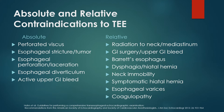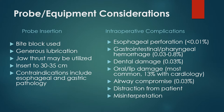Probe and equipment considerations: use a bite block to protect both the teeth and the TEE probe, which costs about $50,000. Generous lubrication decreases air in the esophagus and improves contact. Decrease the amount of air in the esophagus and improve contact for better imaging.